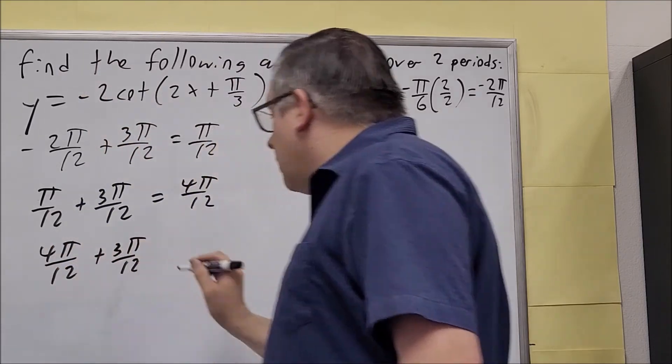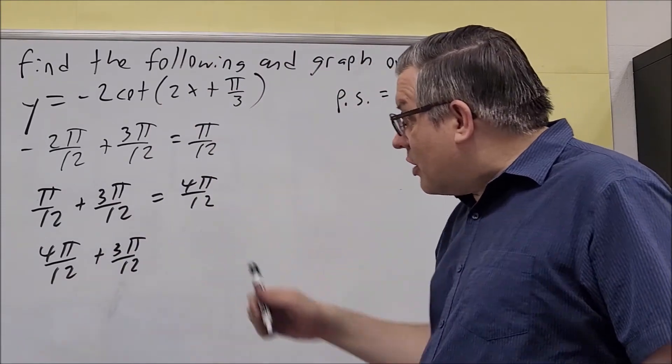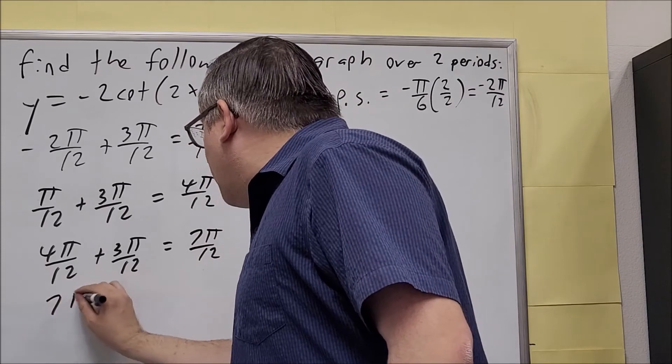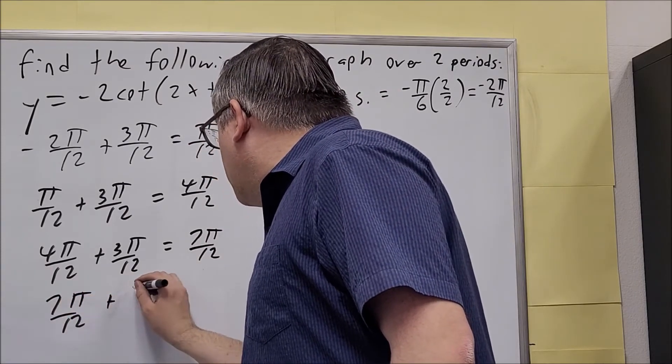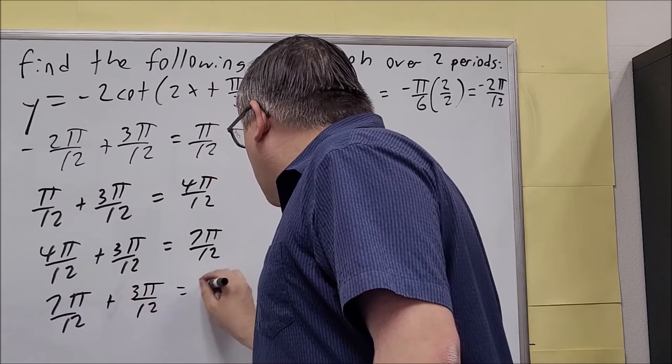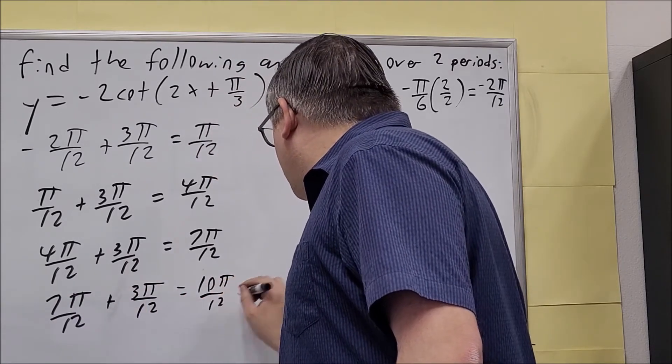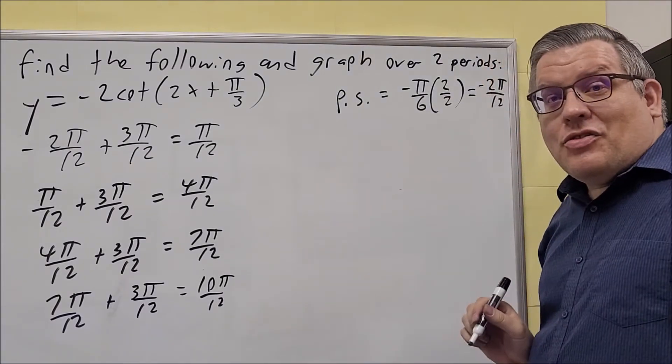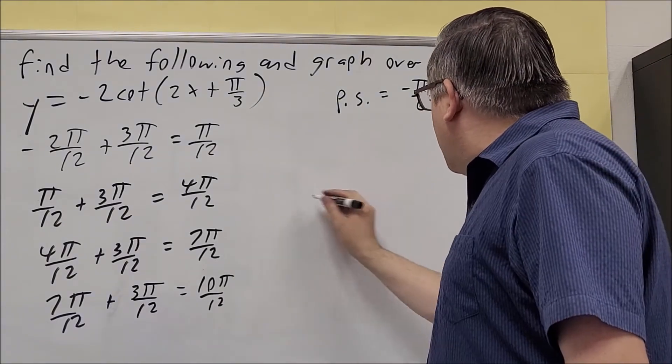So π over 12 plus 3π over 12 is 4π over 12. And we just keep adding that. I'm going to add another 3π over 12 to that. Again, that's our half point. 7π over 12. And then 7π over 12, we'll add another 3π over 12 to it. And we get 10π over 12. All right, so now we have this one. This is our first key point. And then we have these. So let's put those down.